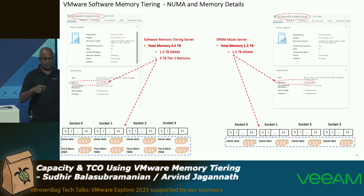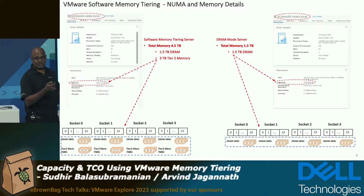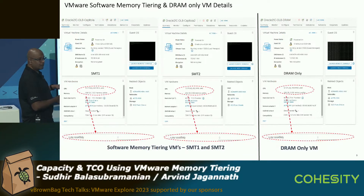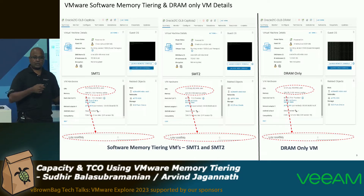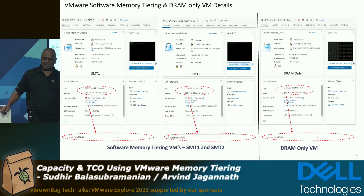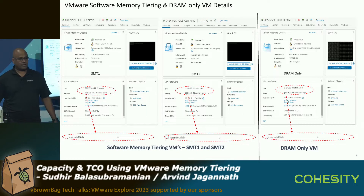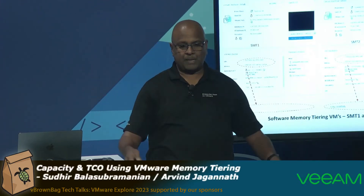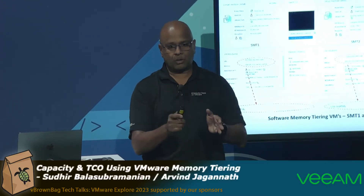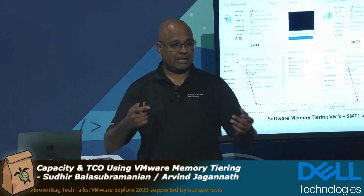Here's how the NUMA topology looks from an ESXi perspective: four sockets, each with 384 GB DRAM and 768 GB of persistent memory. The goal is to prove you can increase capacity and achieve lower TCO when you pile on Tier 2 memory — so you don't have to go back to the IT department asking for more expensive DRAM. How many times have you said 'you gave me 512 GB, now I need a terabyte' or 'you gave me a terabyte, I need 2 TB'? With Tier 2 memory — yes it's slower, higher latency — but you can run more aggregate workload.